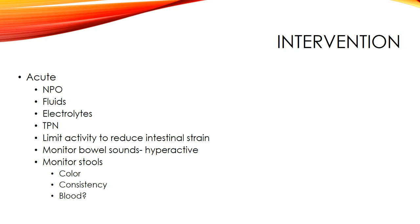For acute interventions, the patient is NPO to give the bowel rest, and you'll provide fluids for hydration, electrolyte replacement, and TPN. Limit activity to reduce intestinal strain, since using abdominal muscles for any activity exacerbates pain. Monitor bowel sounds, which should be hyperactive, and monitor stools for color, consistency, and blood. Blood in the stool may indicate worsening ulceration, and the amount of blood may suggest a possible perforation.